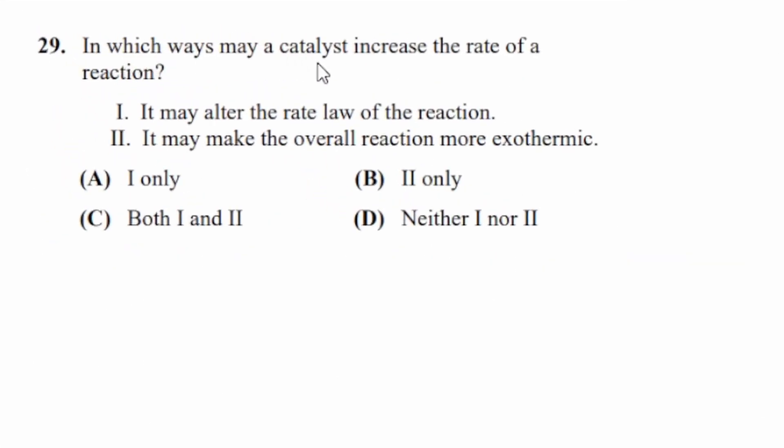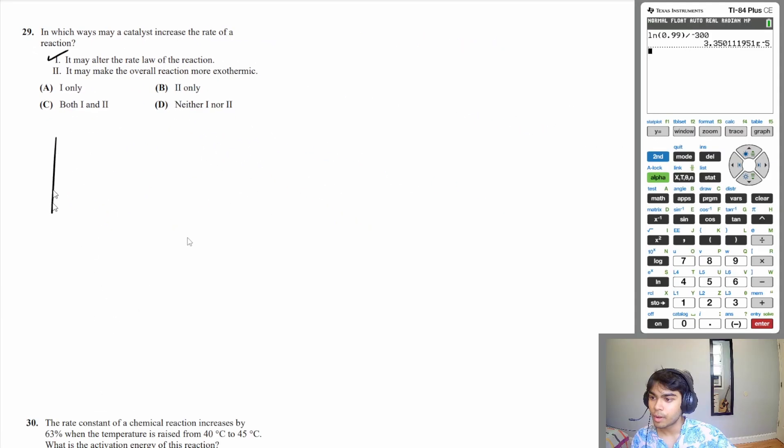Let's move on to question 29. In which ways may a catalyst increase the rate of a reaction? One, it may alter the rate law of the reaction. A catalyst can, it does completely change the pathway that a reaction takes. So that means it can change the elementary steps that a reaction takes. And because of that, it can actually affect the rate law of the overall reaction. So one is correct. Two, it may make the overall reaction more exothermic. That is not true. A reaction is going to have a certain change in enthalpy value regardless of what path it takes. Remember, let's say this is your energy diagram and this is your time. If you have reactants here and products here, a normal pathway might look like this and a catalyzed reaction might look like this. So you have more intermediates, but overall your activation energy is lower than that of the uncatalyzed reaction.